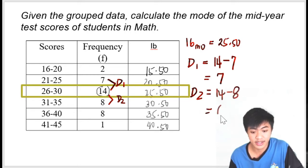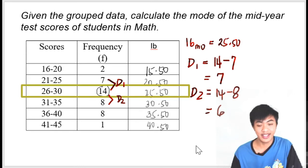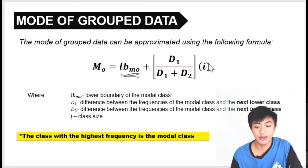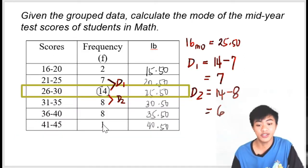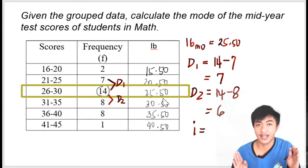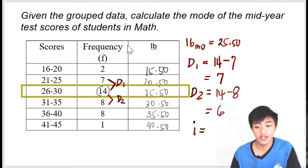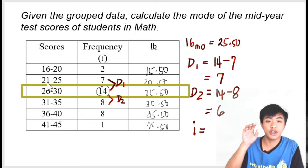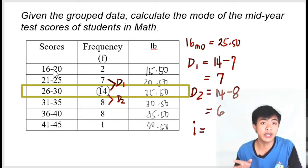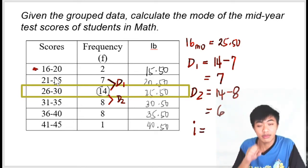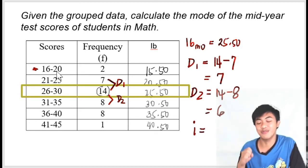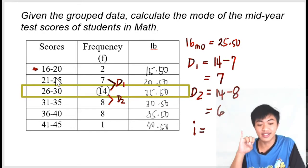What else do we need from the formula? The class size. Class size can be obtained simply by counting. Class size is how wide or large our class interval is. Pick any class interval—the class size is the same for all of them—and count from the lower limit to the upper limit. Let's say this one: the lower limit is 16. Count 16, 17, 18, 19, 20. From 16 to 20, the class size is 5.